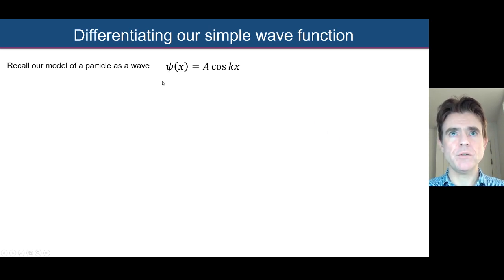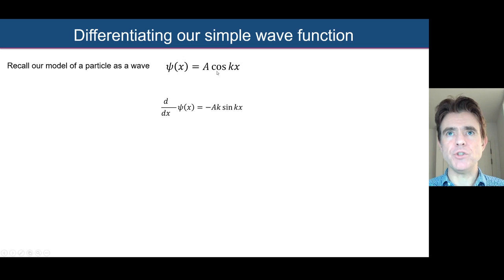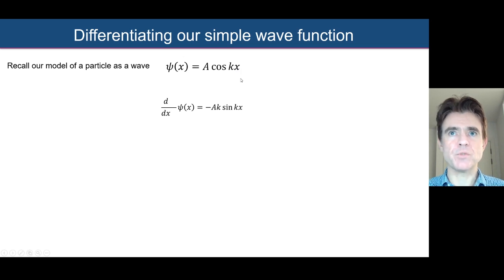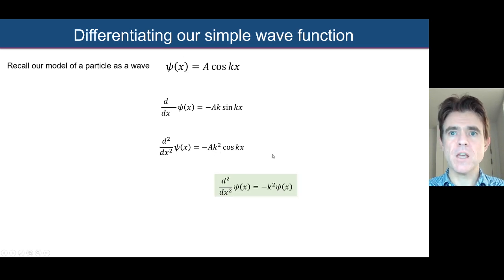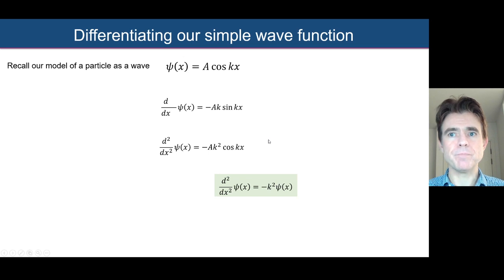Going back to our wave function — modelling an electron as a cosine of spatial frequency k with amplitude a — if we differentiate it, the cosine becomes a negative sine, and by the chain rule we multiply by k, giving −ak sin(kx). Taking the second derivative, sine becomes cosine and we multiply by k again, giving −ak² cos(kx). So the second derivative of the wave function equals −k² times the wave function itself.